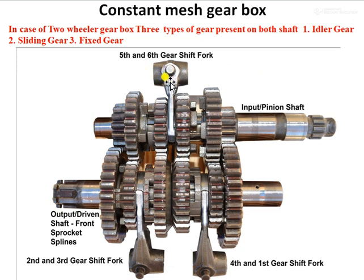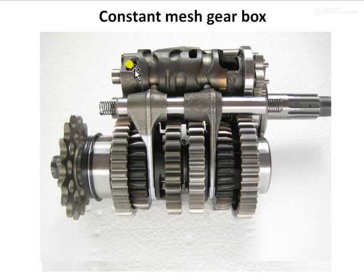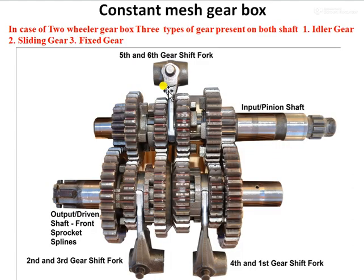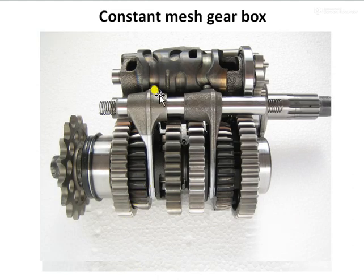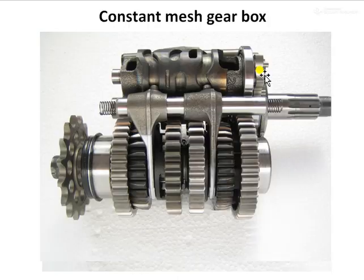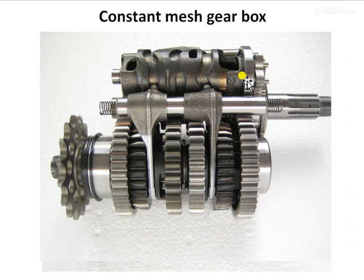This linear movement is achieved by a selector drum. The pin is located inside grooves on the drum. The drum has grooves on its surface, and the pin follows the path inside these grooves. When we operate the gear selector lever, the drum rotates clockwise or anticlockwise. As the drum rotates, the pin follows the groove profile, causing the fork rod to slide in one direction or the other, thereby selecting the appropriate gear.